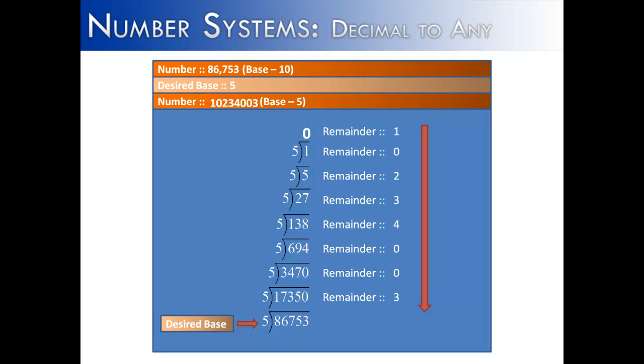So all we did is take the desired base and continually divided into it until the quotient was 0. And then we took the remainder, started from where we left off, and went down to get the number in base 5.